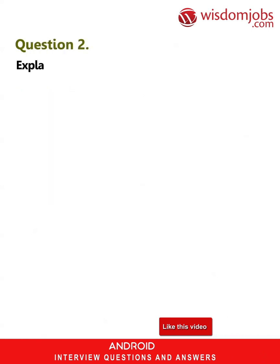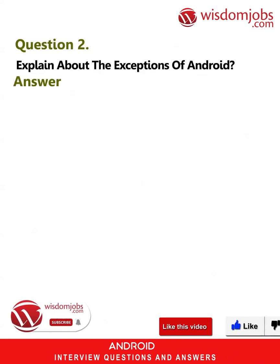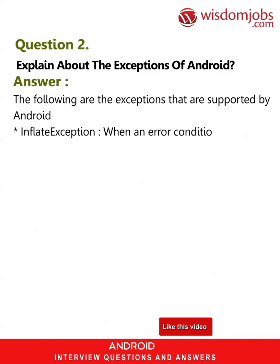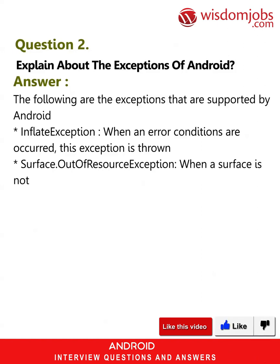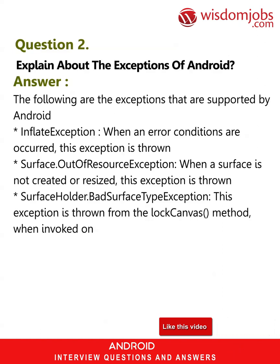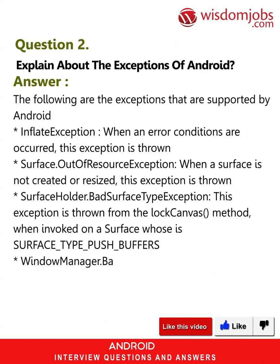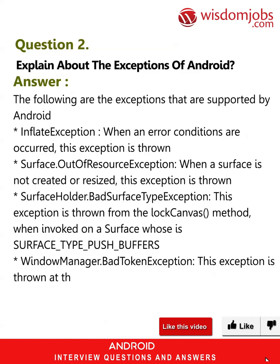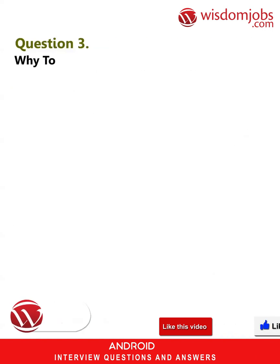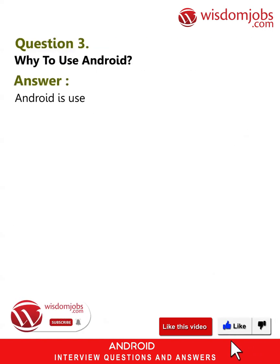Question 2: Explain about the exceptions of Android. Answer: The following are the exceptions supported by Android. InflateException: thrown when error conditions occur. Surface.OutOfResourceException: thrown when a surface is not created or resized. SurfaceHolder.BadSurfaceTypeException: thrown from the lockCanvas method when invoked on a surface whose type is SURFACE_TYPE_PUSH_BUFFERS. WindowManager.BadTokenException: thrown when trying to add a view with an invalid WindowManager layout params token.